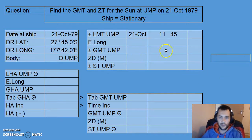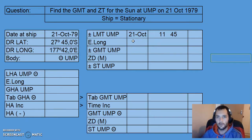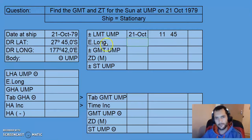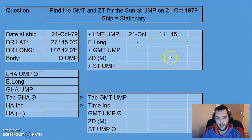So 11:45. As mentioned in the previous video, Upper Meridian Passage times will always be approximately noon — approximately 12 o'clock at the observer's local time. Since we have an eastern longitude in this case, we're going from local time back to Greenwich. We're to the east of Greenwich, going back to Greenwich, therefore we need to subtract our longitude in time format.